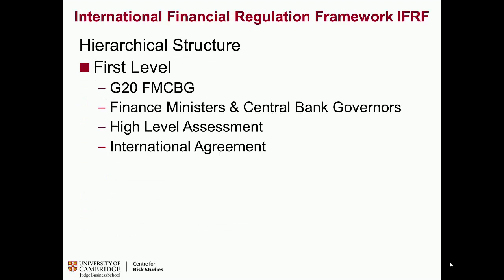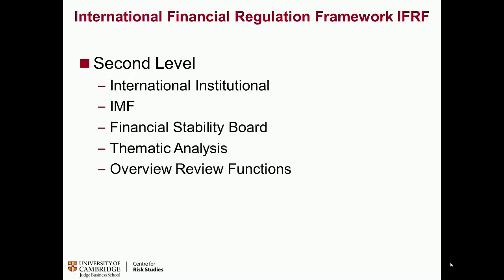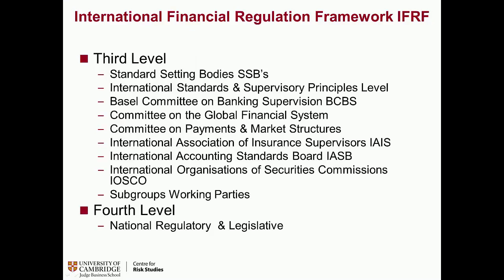Just to review the hierarchical structure of the current framework — there are three levels really. There's the top level, which is the G20, the finance ministers, central bank governors. This is where the high-level assessment and international agreements take place. The second level is where the international institutions sit: the IMF and the relatively more recent Financial Stability Board. They're primarily concerned with thematic analysis and overview and review functions.